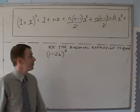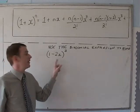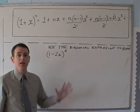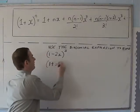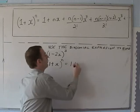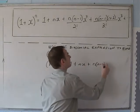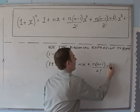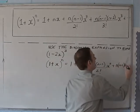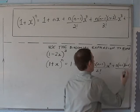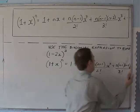So again, revision. Use the binomial expansion to find (1-2x)^3. In the exam we always write down the formula: (1+x)^n equals 1 plus nx plus n(n-1)/2! times x squared, plus n(n-1)(n-2)/3! times x cubed.